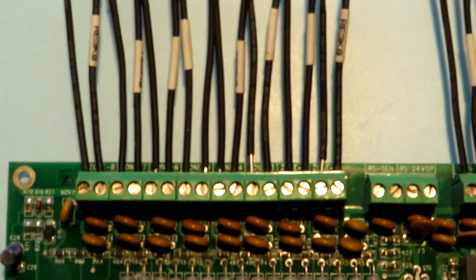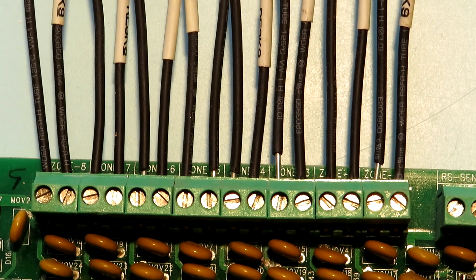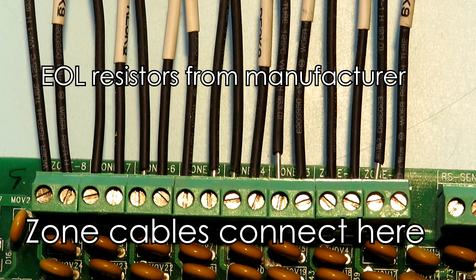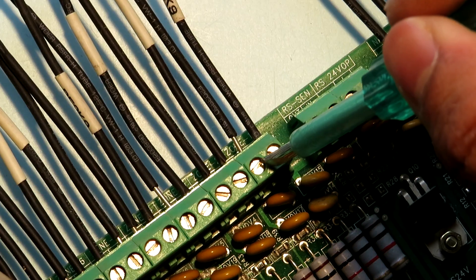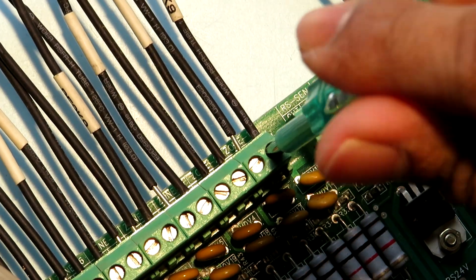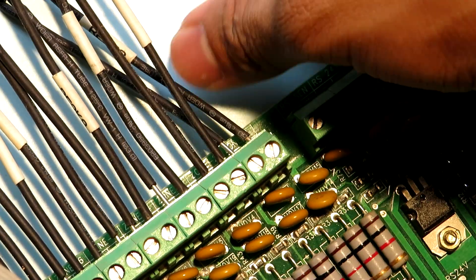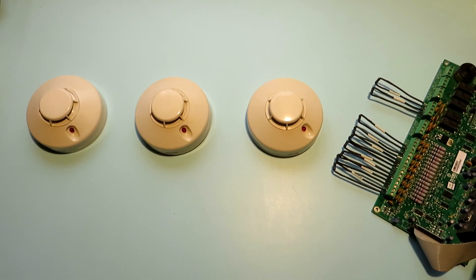This is an 8 zone panel and the wires from the 8 zones connect here. The black things you can see on the top are EOL resistors that have been provided by the manufacturer. Here I'll be connecting the detectors to zone 1. So I'll take out the EOL resistor and insert the zone cables.